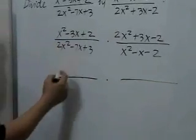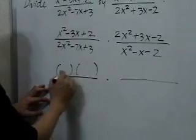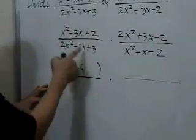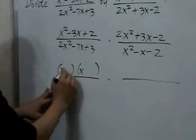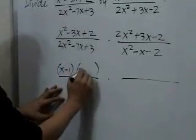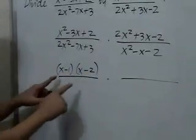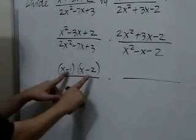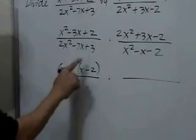So for x²-3x+2, we have x and x, we have a 2 here and a negative 3 there. So we'll have (x-1) and then (x-2). You can check that: x², negative 2x minus x is negative 3x, negative 1 times negative 2 is positive 2.